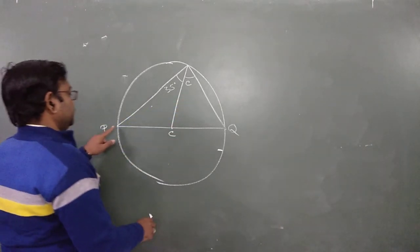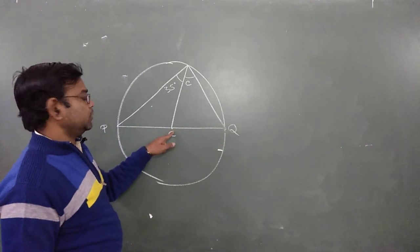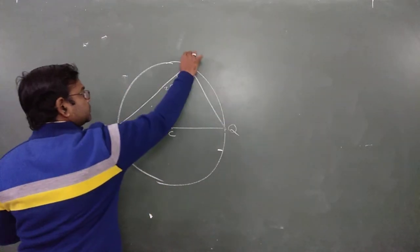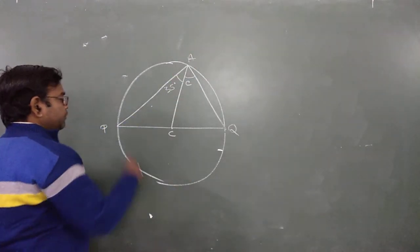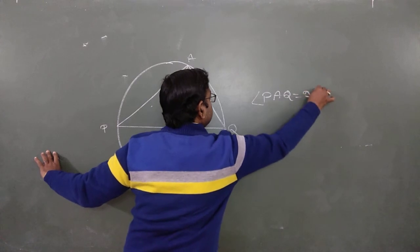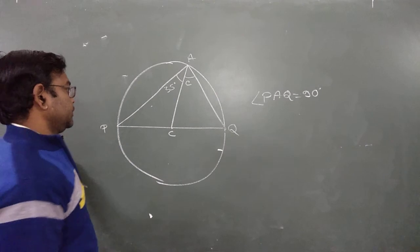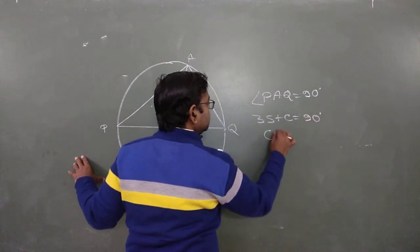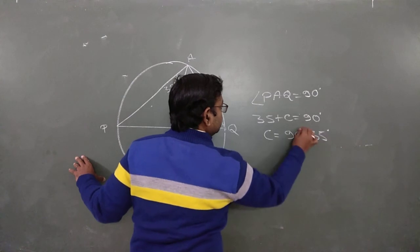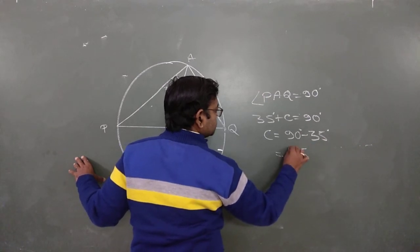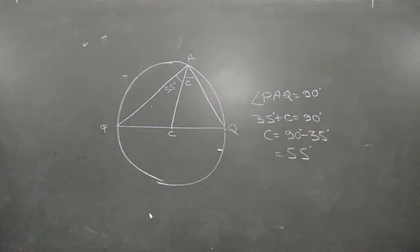This is very easy. Since chord PQ passes through the center, it is a diameter, which means it forms a semicircle. Call the point on the circumference A. The angle made on the circumference of a semicircle equals 90 degrees, so angle PAQ equals 90 degrees. Therefore, 35 plus C equals 90 degrees, and C equals 90 minus 35, which is 55 degrees.